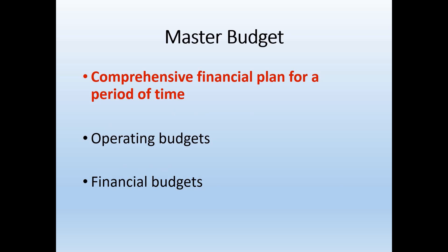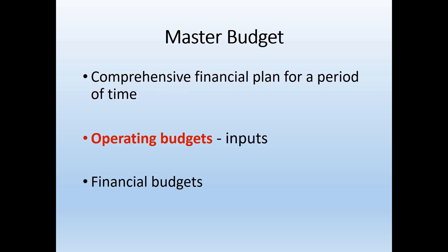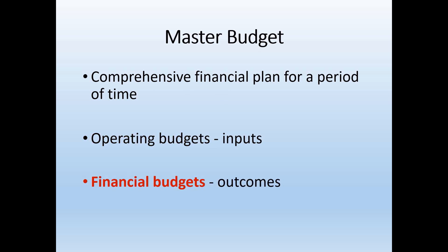The master budget is the firm's comprehensive financial plan for the coming period, and it contains a lot of smaller budgets divided into two categories. Operating budgets focus on inputs — what the firm needs in order to accomplish its goals. Financial budgets focus on outcomes — that is, how the firm will look at the end of the period based on its expectations.